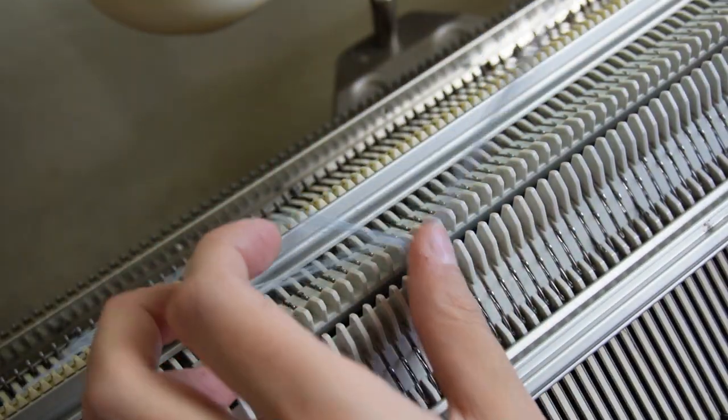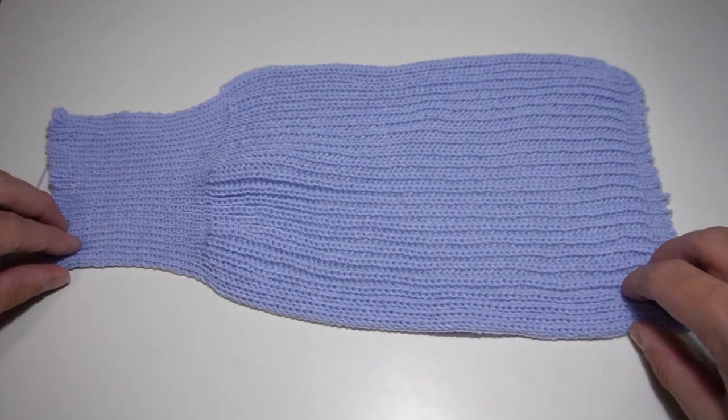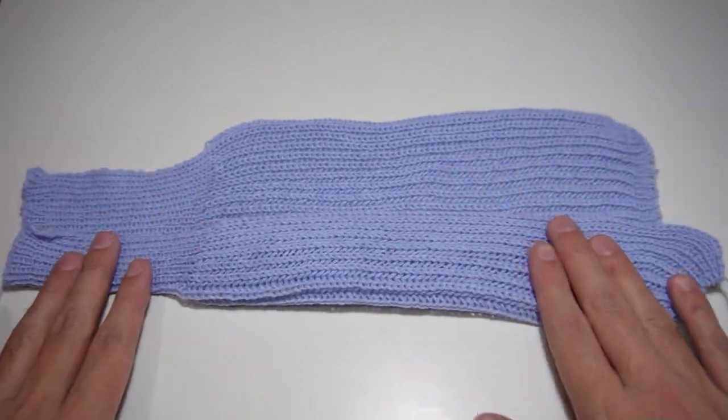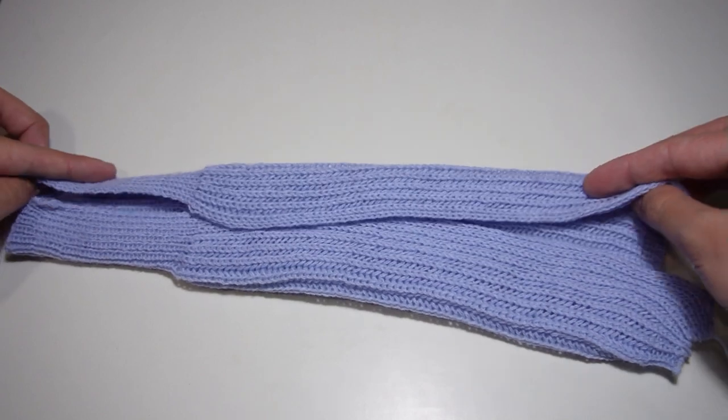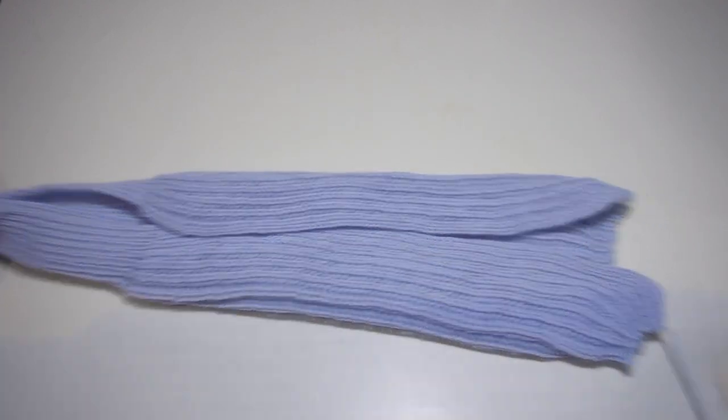When you take the last stitch the knitting will fall off the machine. This is what the knitting looks like right after you take it from the machine. You simply have to fold it and sew both sides together. It does not have a right and a wrong side.